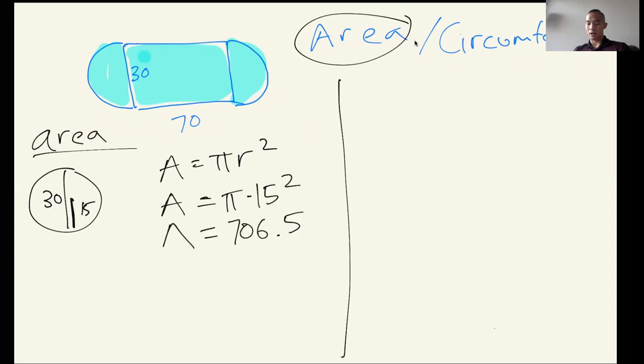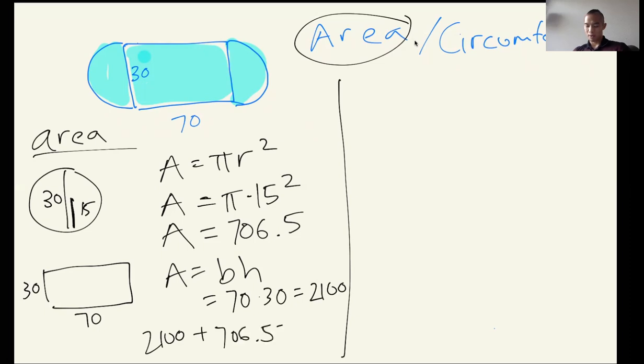However, this is just area of the circle. We also need the rectangle in the middle, which is 30 by 70, and that's nice and easy. Area is base times height, so that's 70 times 30, which gets me 2100. Now the total area is if I add the two together: 2100 plus 706.5, and I would get 2806.5. So everyone, that is just the area.